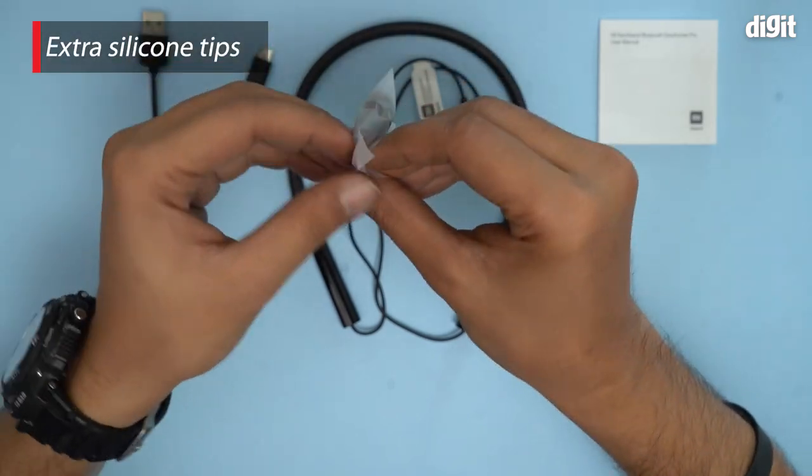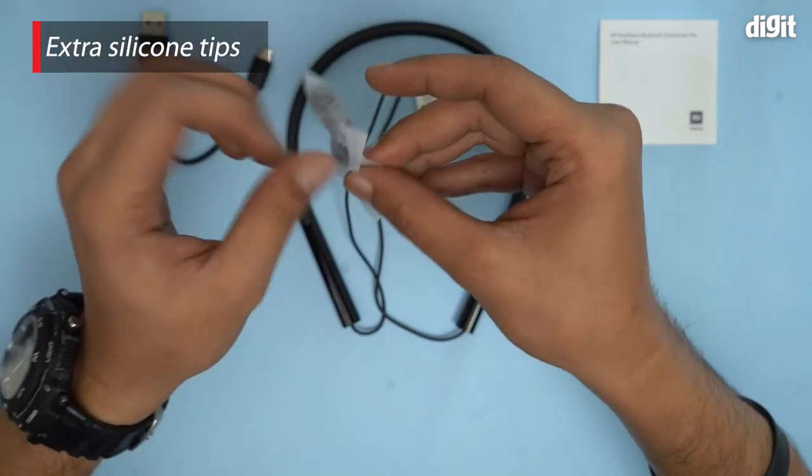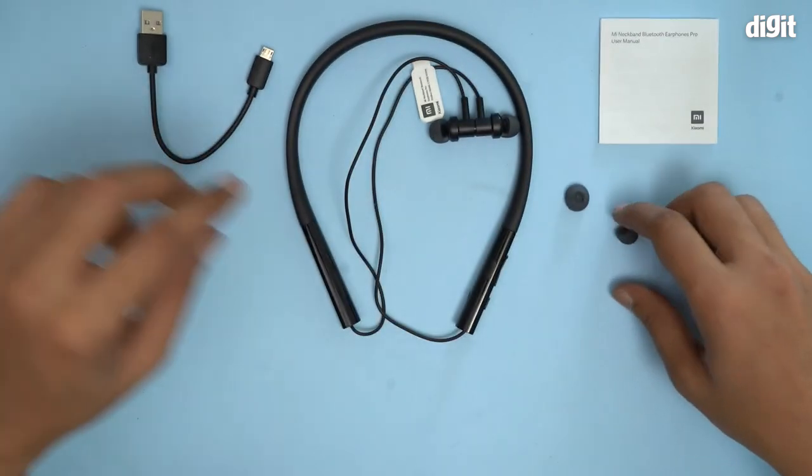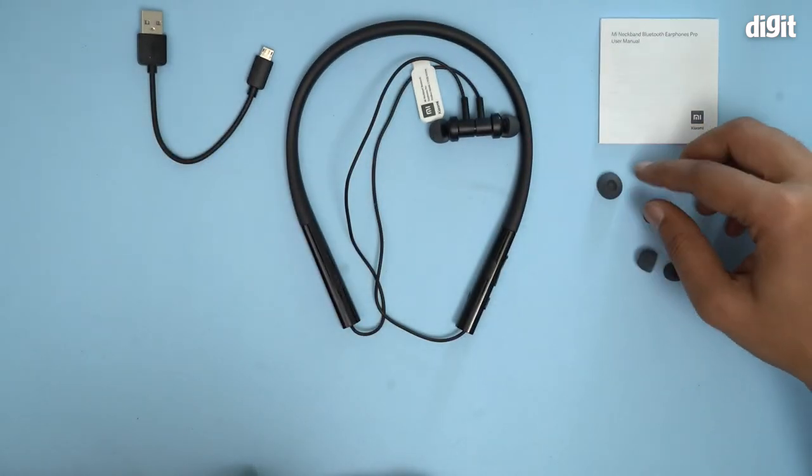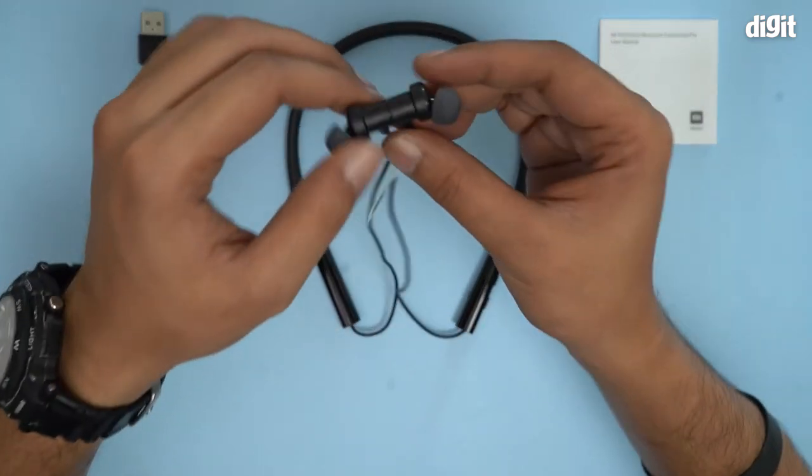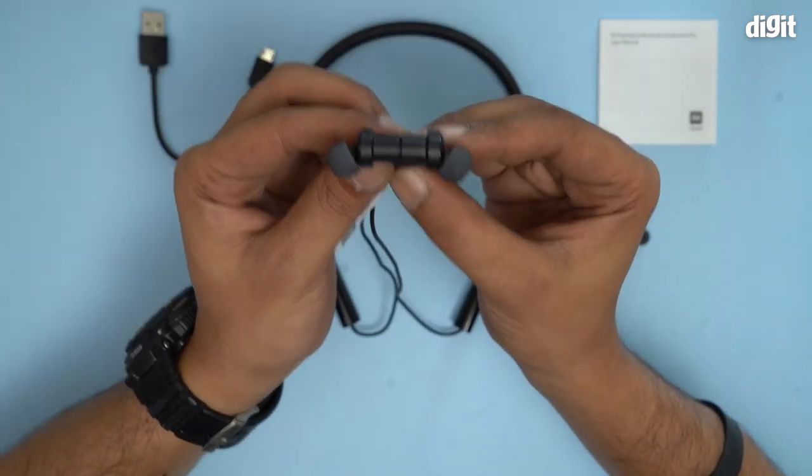And finally, we have two pairs of silicon buds. There are two pairs. This is the larger one. And this here is the small variant with the medium size attached to the headset.